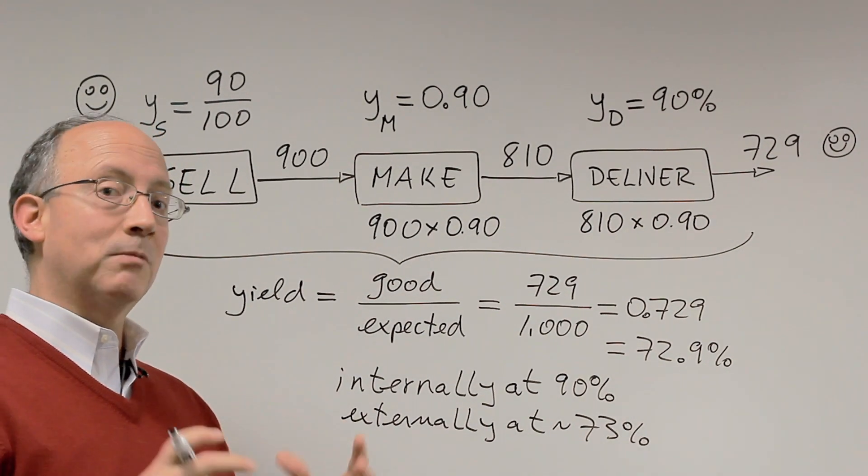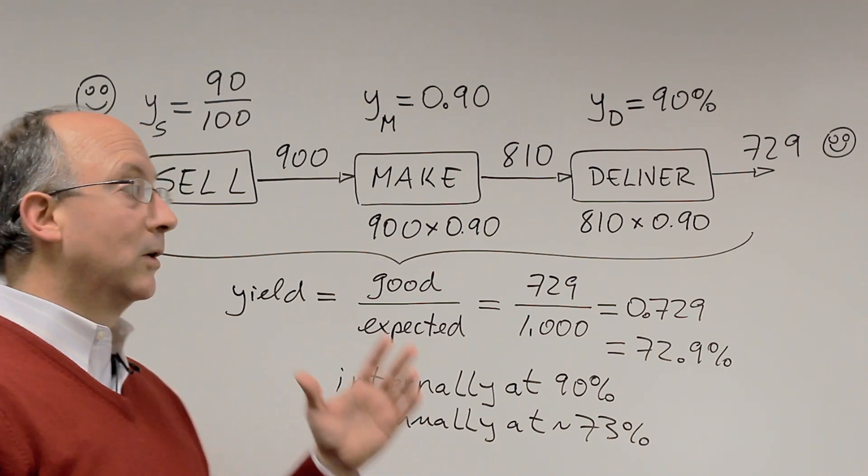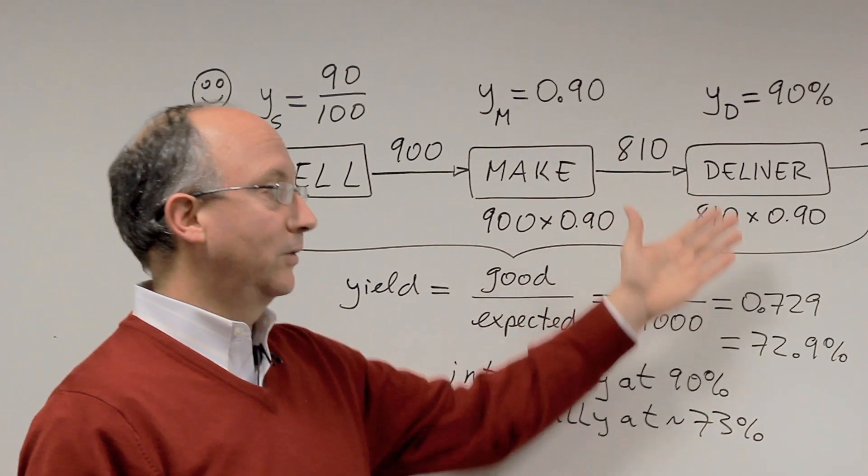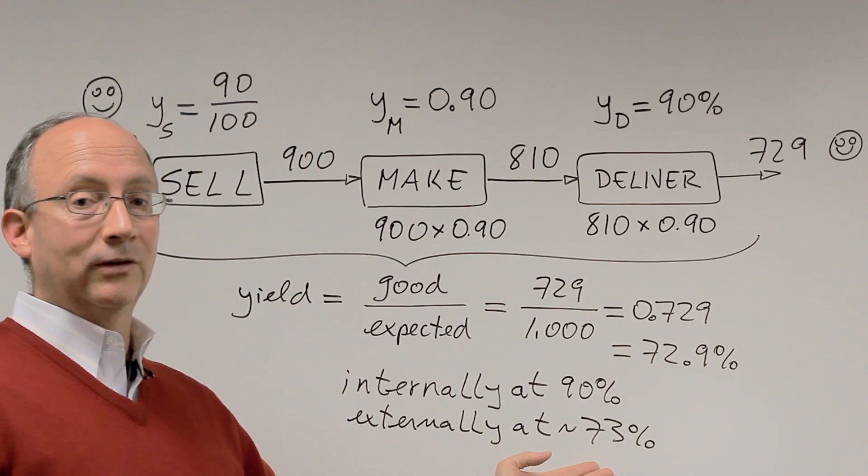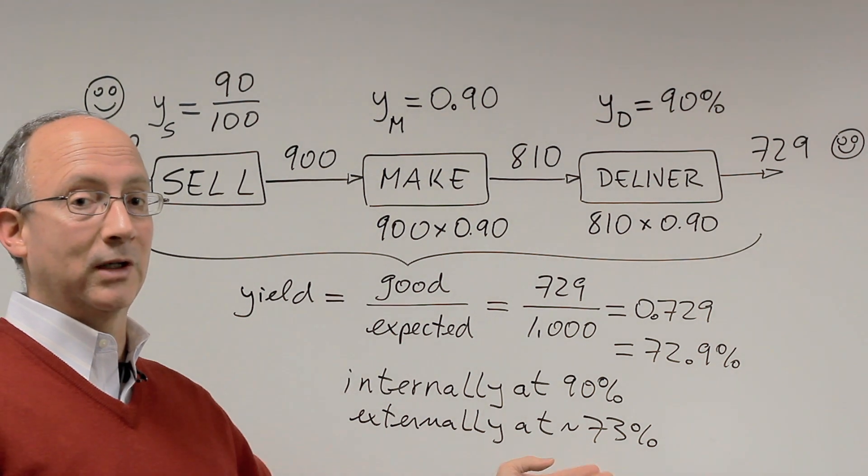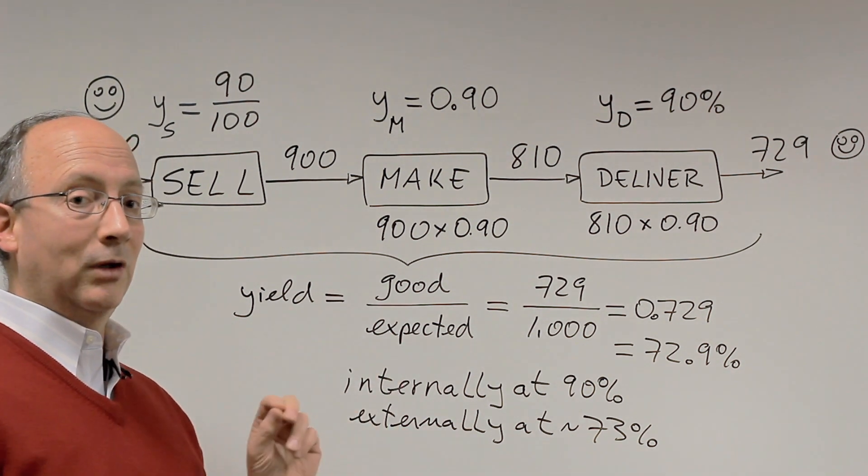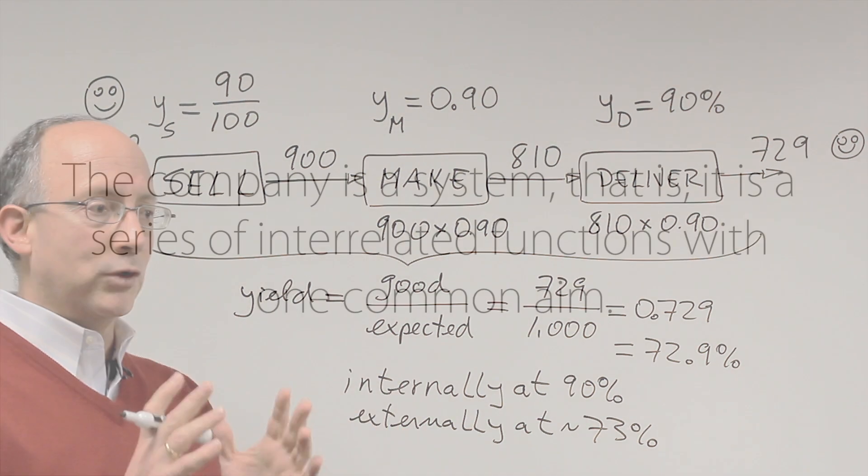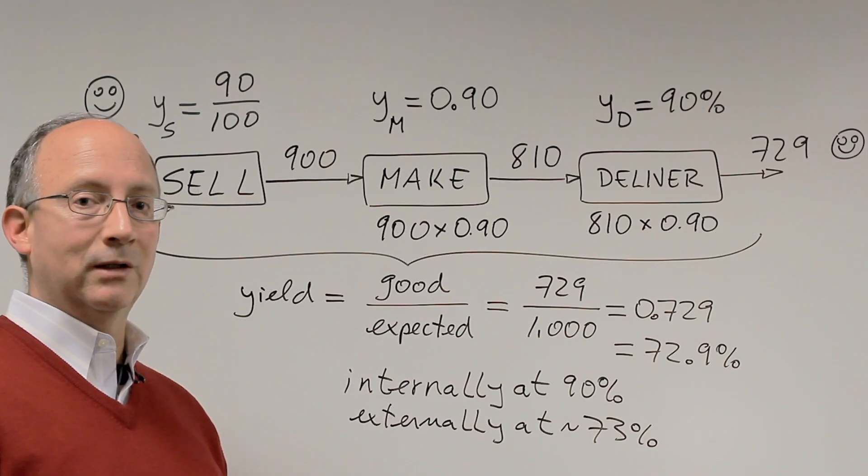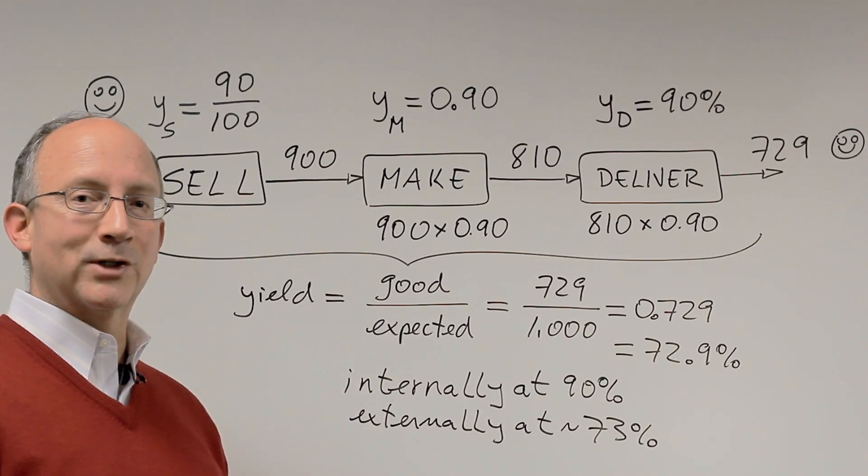Deming tells us that a company really is a system which is multiple functions interconnected. We can see here that actually this is the level of performance of the system at about 73%, very different from the limited perception that each one of the functions may have. We will continue exploring the consequences of the notion of first-time yield in a future video. Thank you for your time.